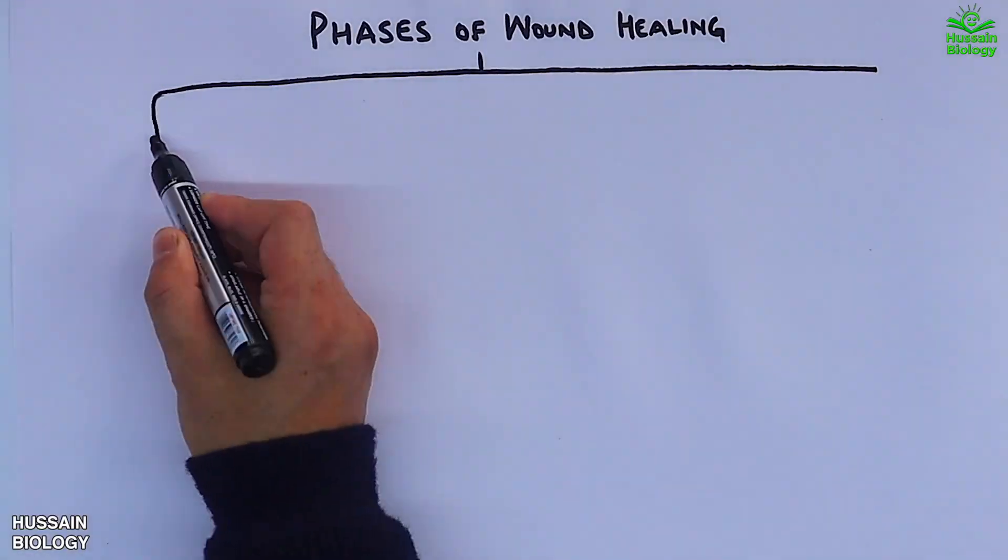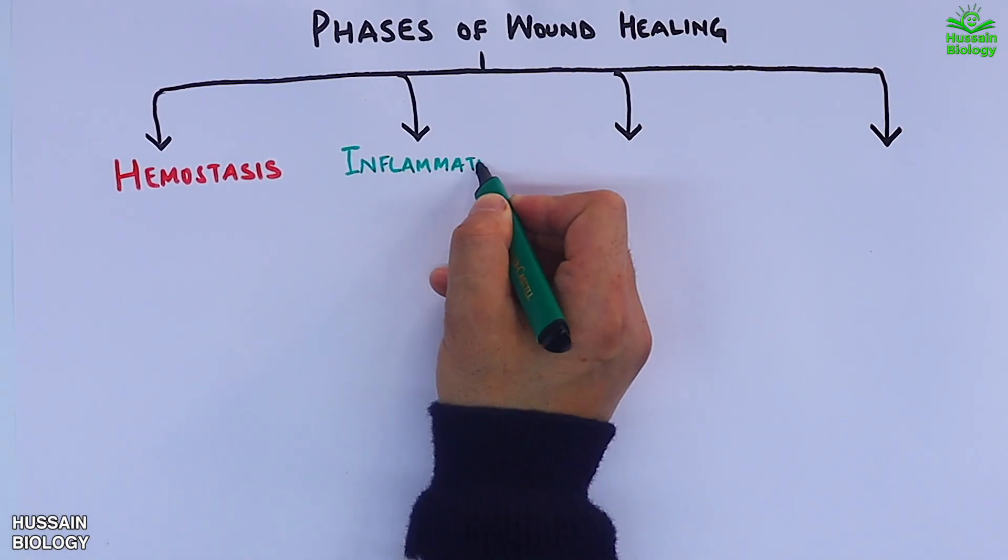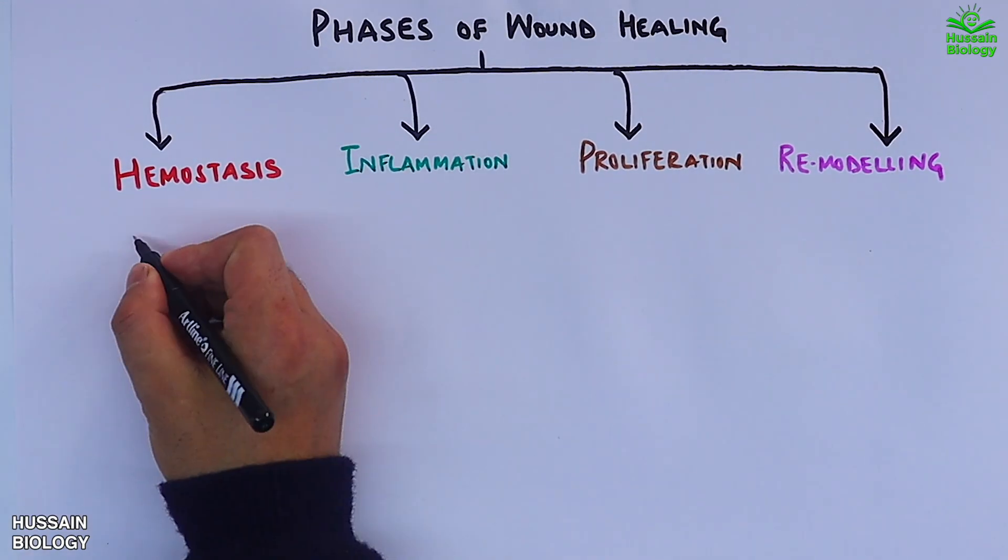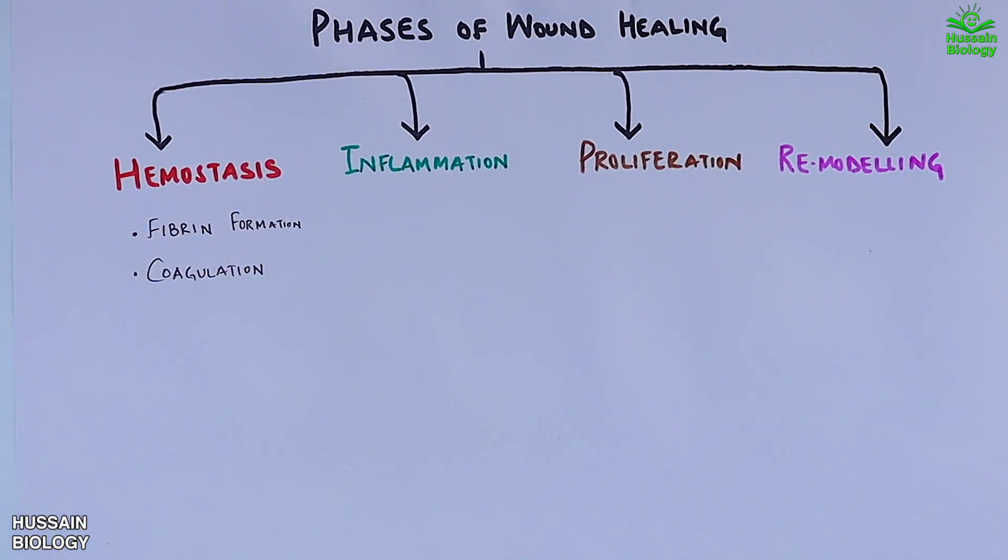The first phase is the hemostasis, followed by inflammation, then proliferation, and then remodeling. So basically we have four different phases. Briefly we can see in hemostasis we have the fibrin formation and coagulation, and then the bleeding stops.